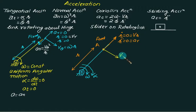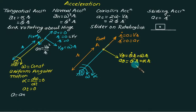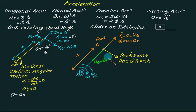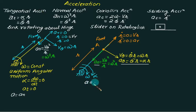Alpha times r gives the tangential value, a-theta, equal to alpha times r, equal to theta-double-dot times r. In addition, we have centripetal acceleration An equal to omega squared times r, or v-theta squared by r, same as theta-dot squared times r. So we have two components: a-theta and An. The resultant acceleration is obtained using the parallelogram theorem: total acceleration equals the square root of a-theta squared plus An squared.